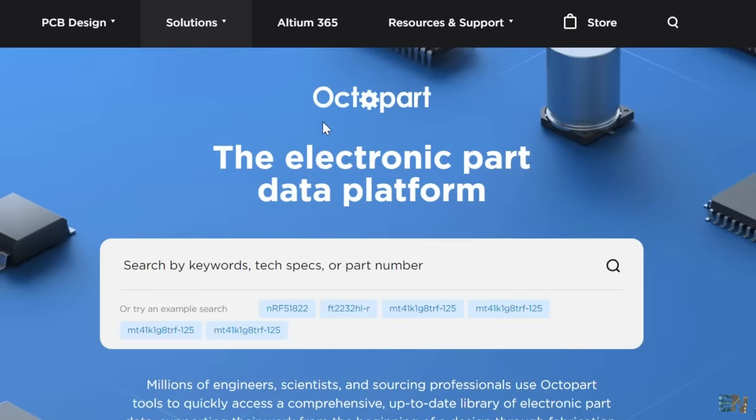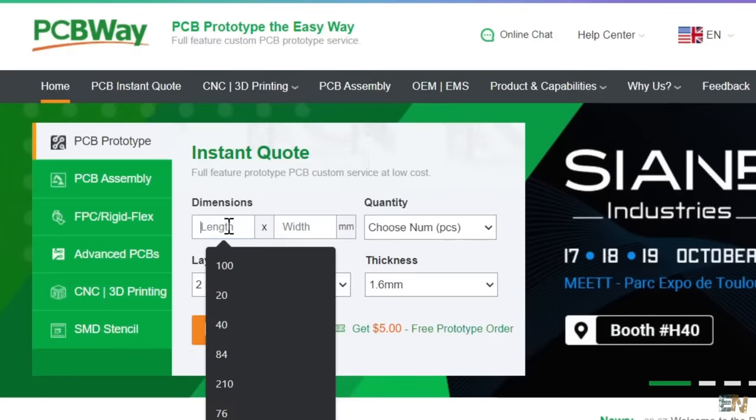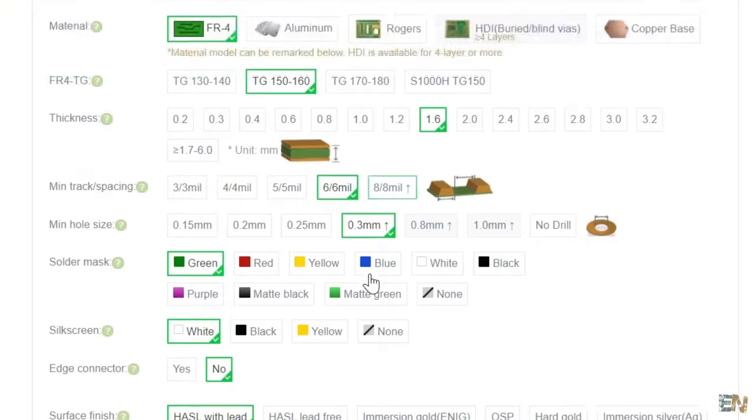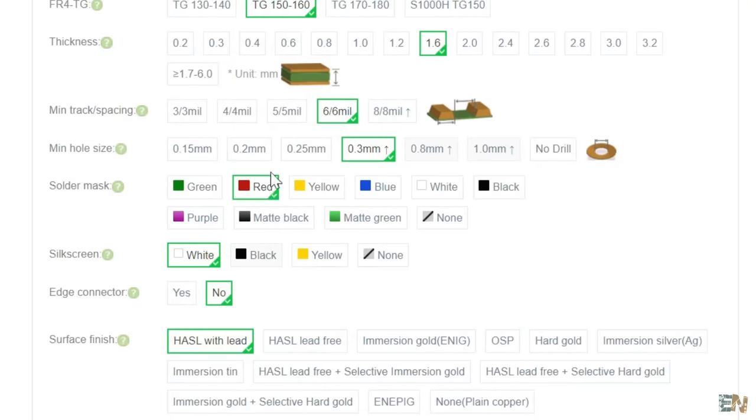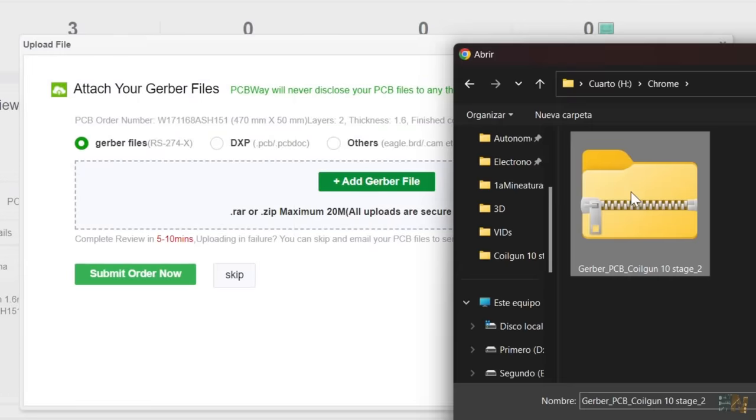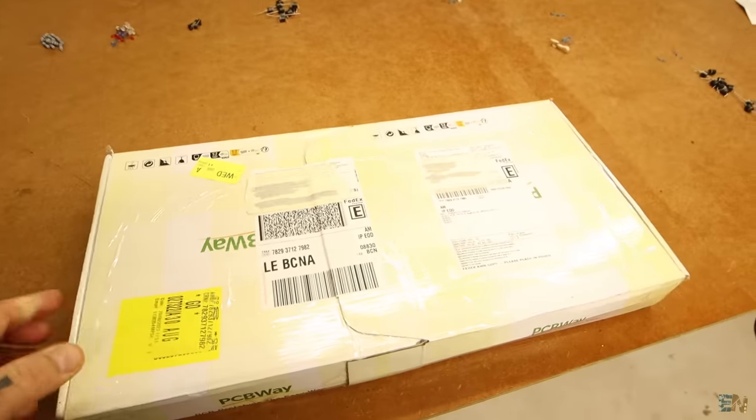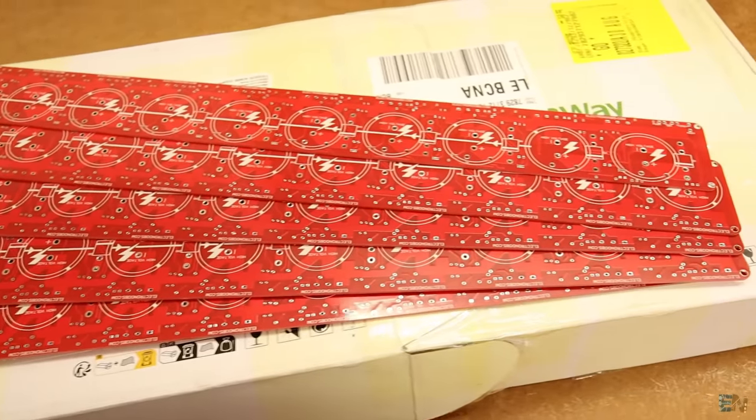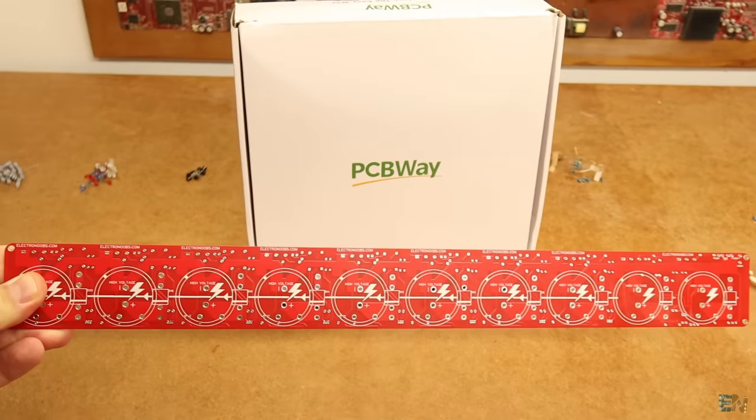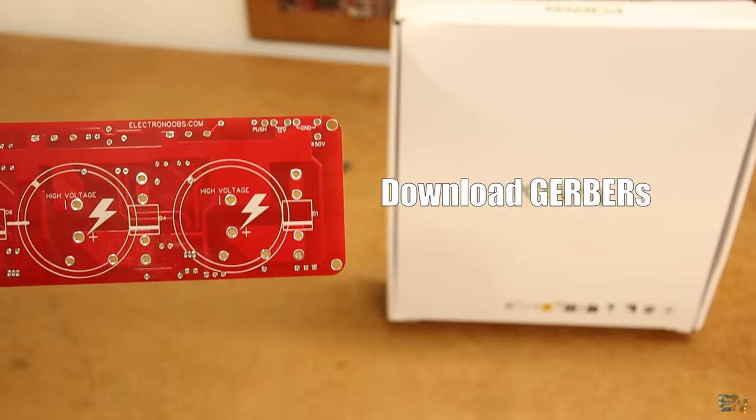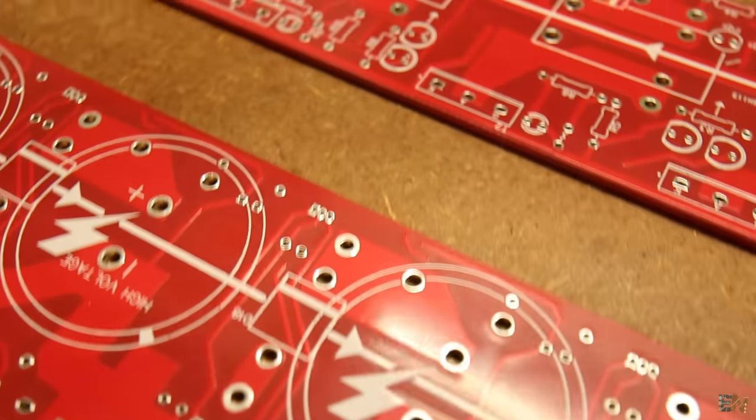I generate the gerbers and go to pcbway.com. Insert the PCB size and click the quote now button. Here I select the red color for the solder mask. I add to cart and on the next page I upload the gerber files generated with Altium. Submit the order and I receive the PCBs in just a few days. They look awesome. I know that the black finish is my favorite, but I also like the red color. It looks great, right? So if you want to try my project, you can download the gerbers for free from the tutorial page and use the services of PCBWay to get the board.